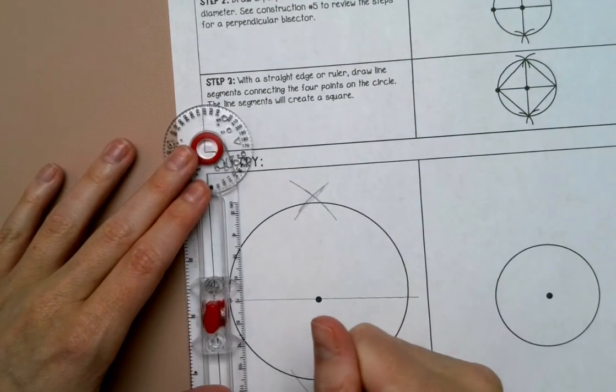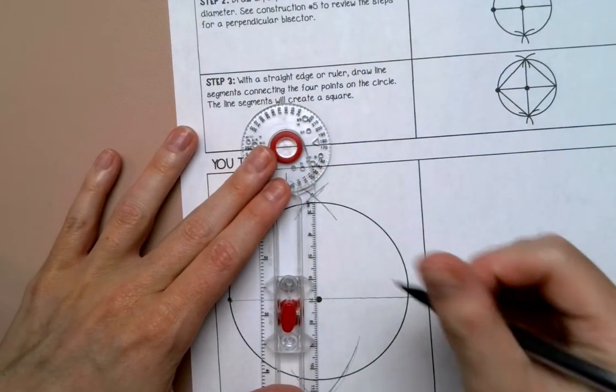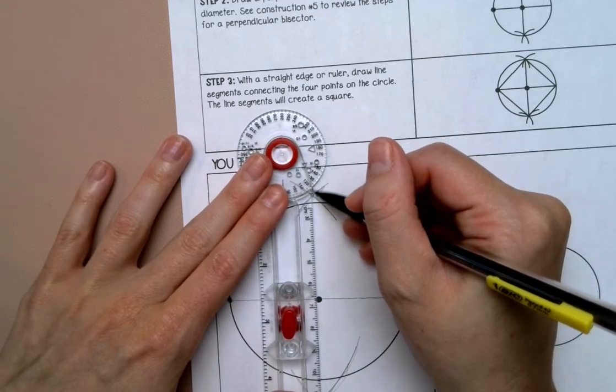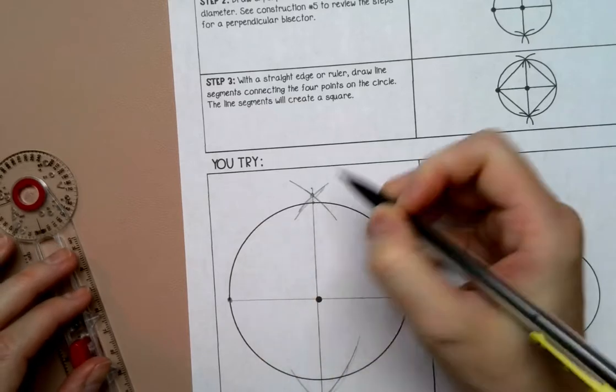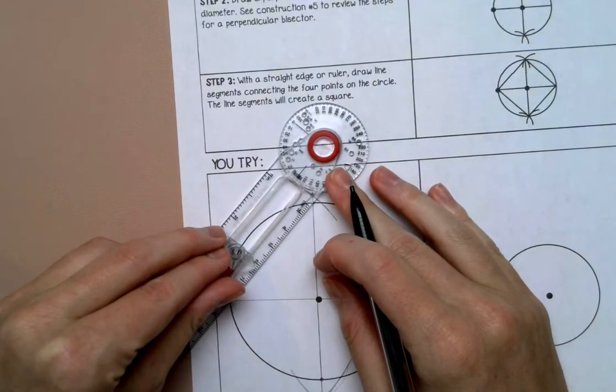And then I'm going to connect. And then I'm going to connect each point on my circle with straight lines to form a square.